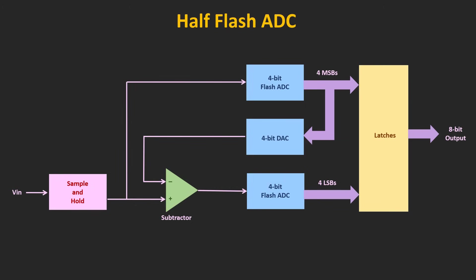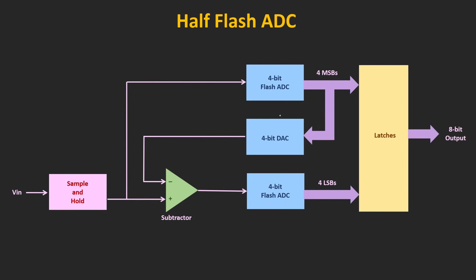In this ADC, first the input signal is sampled using a sample and hold circuit, and the sampled signal is given to the first ADC — the coarse ADC. This ADC converts the input signal into a 4-bit digital code, which represents the four most significant bits of the final code. This 4-bit output is also given to the 4-bit DAC, which converts it back to an analog voltage. This analog voltage is then subtracted from the input signal, and the difference signal is applied as input to the second Flash ADC, which converts it into the 4-bit code — the four least significant bits of the final code.